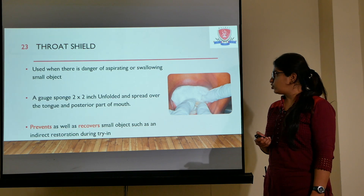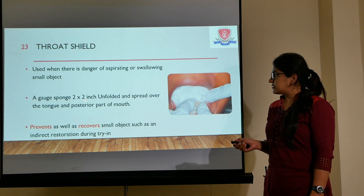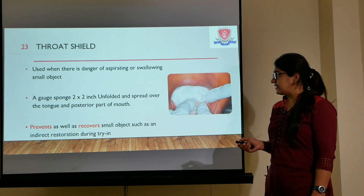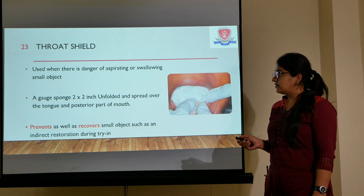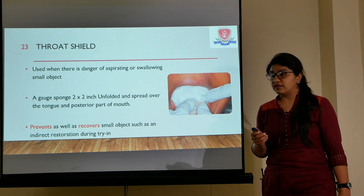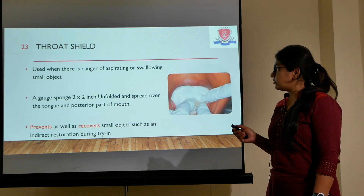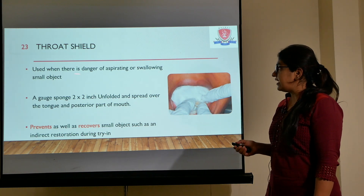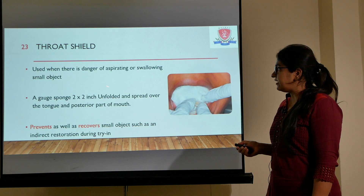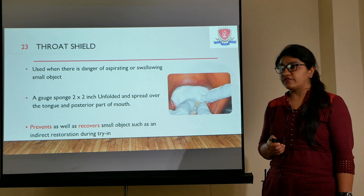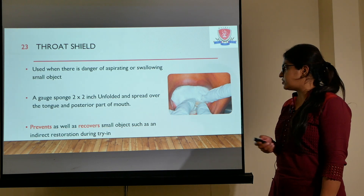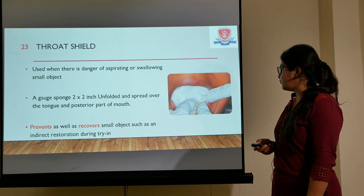Then the throat shield — this is almost like a gauze sponge of 2 by 2 inch size. It has the advantage that apart from providing moisture control, it also helps in preventing the danger of aspirating or swallowing small objects, which is very useful.